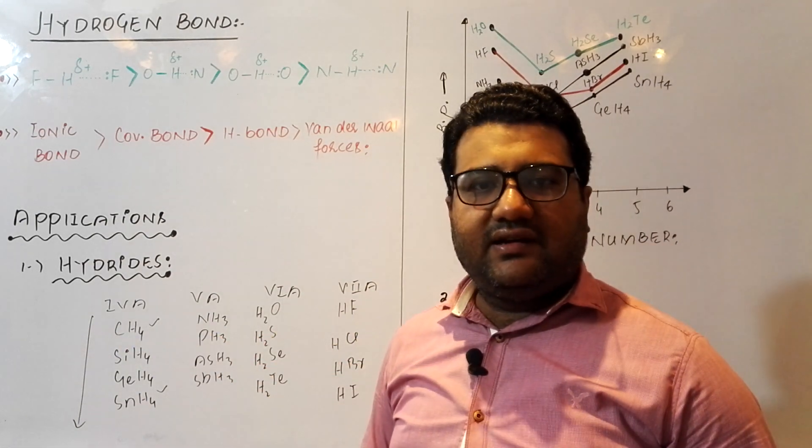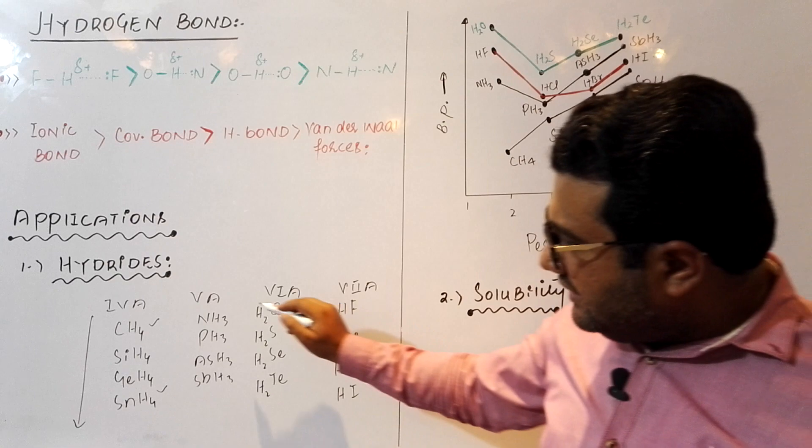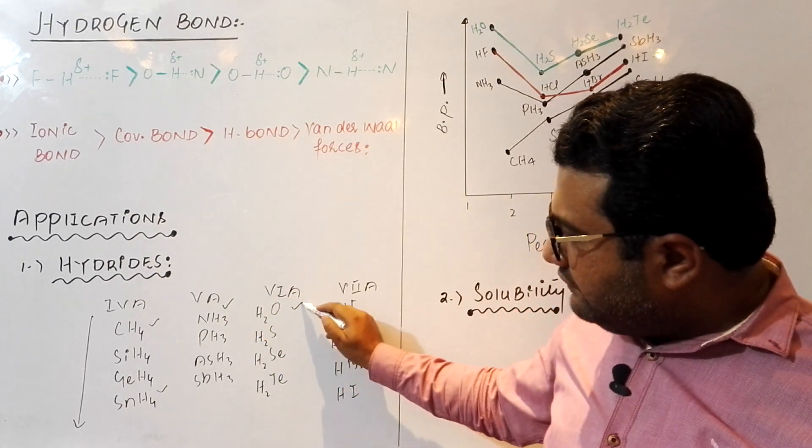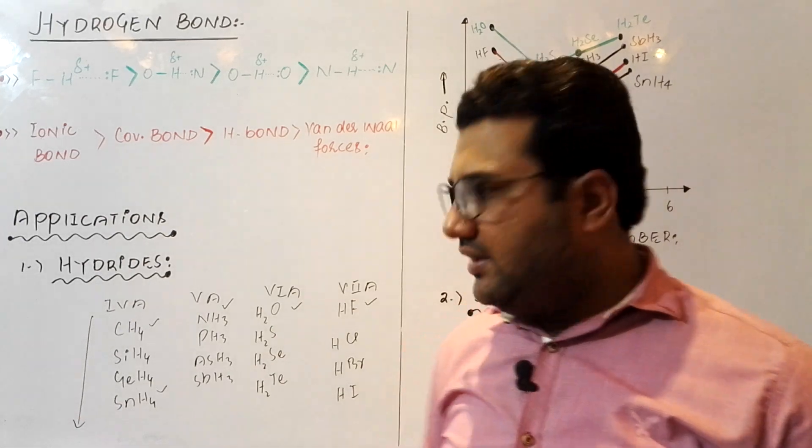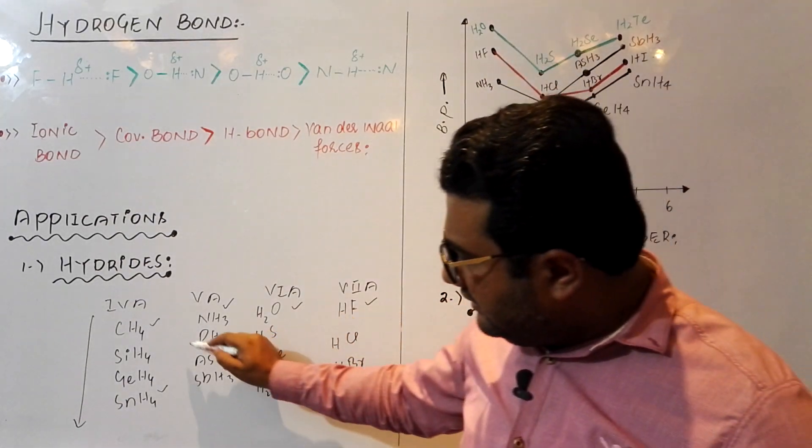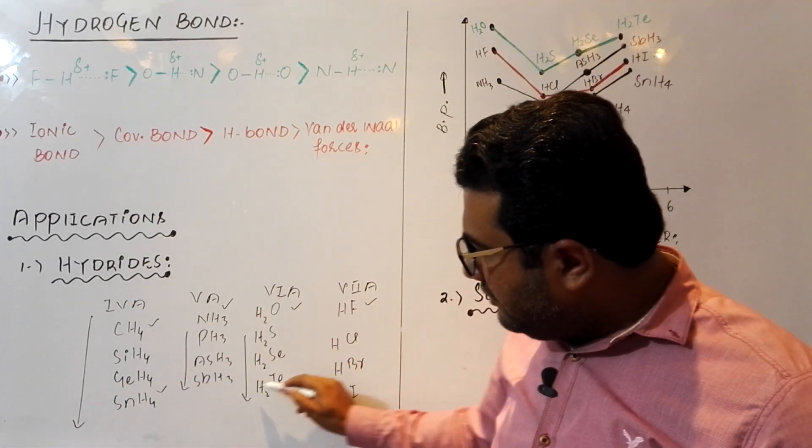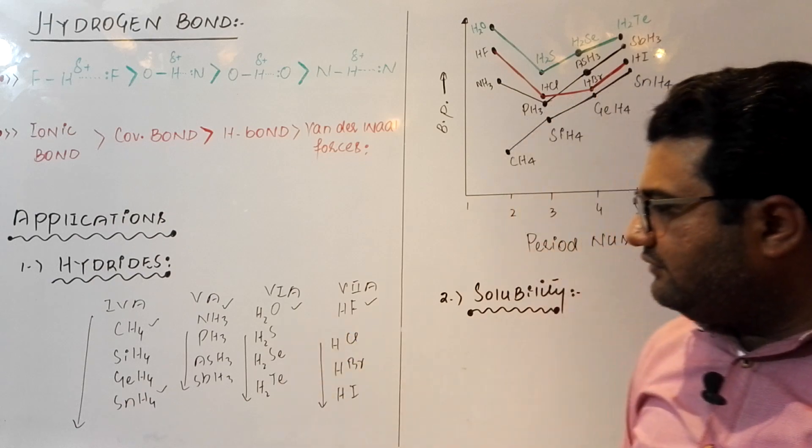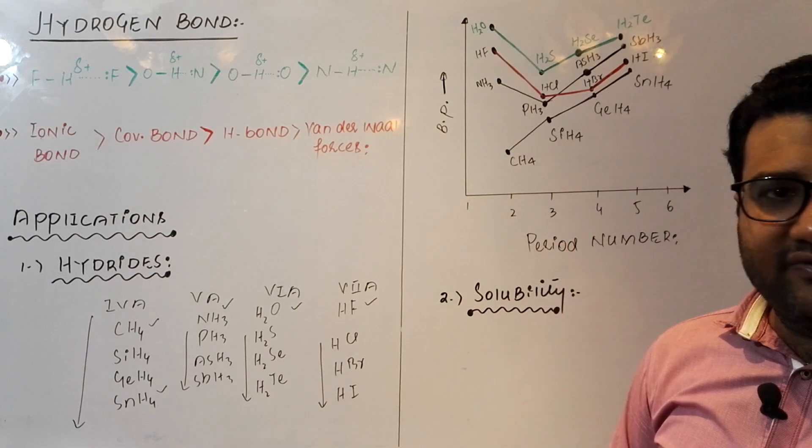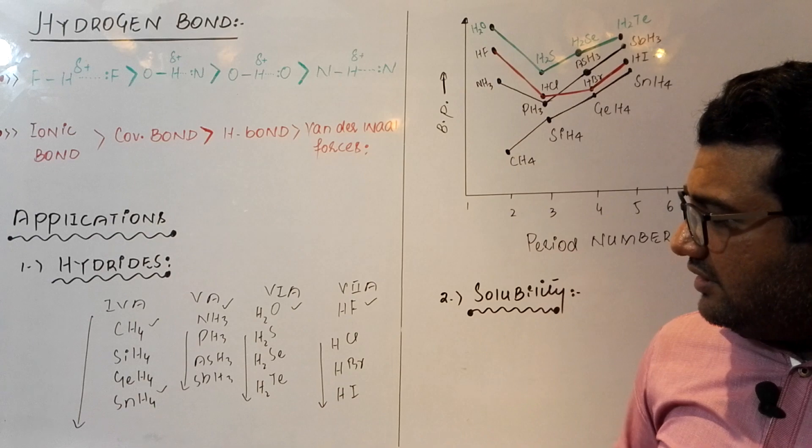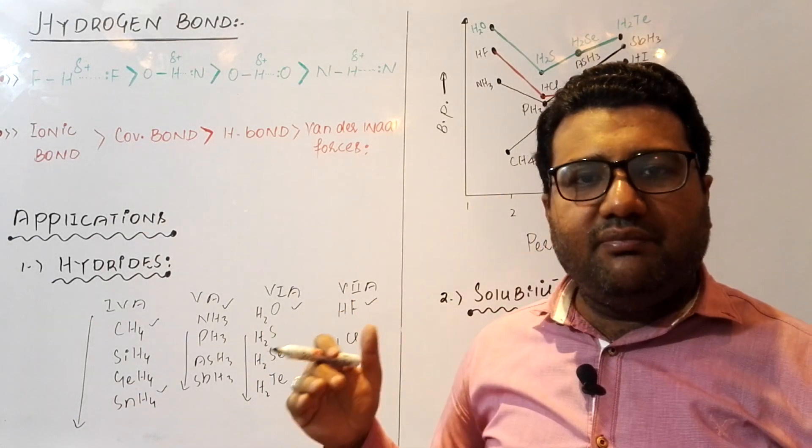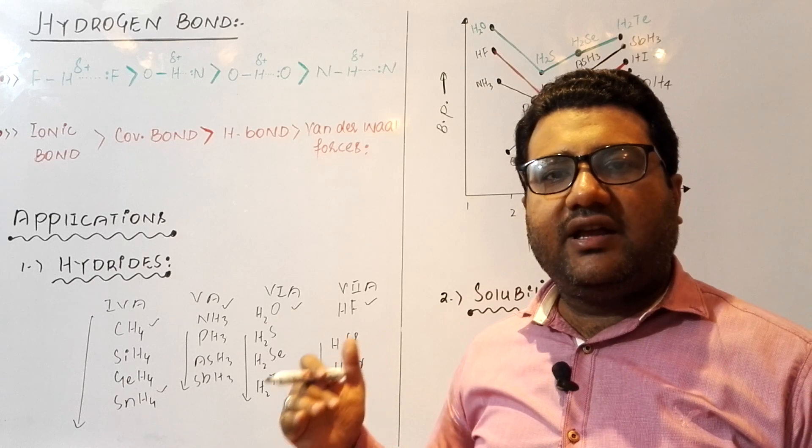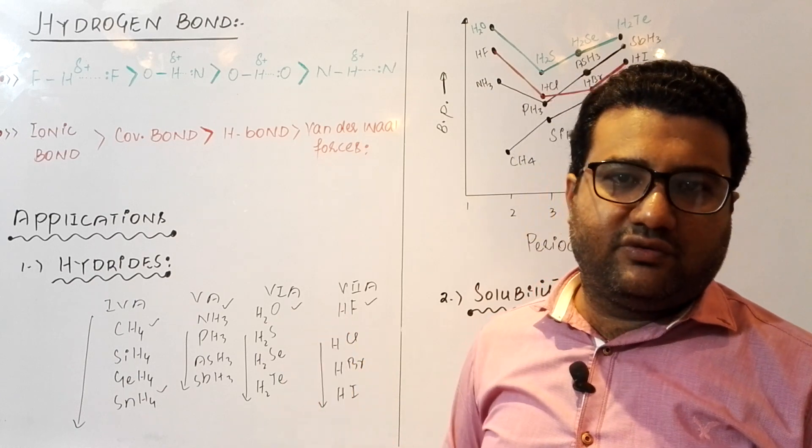In 5A, 6A, and 7A, this normal trend is slightly disturbed. Because in 5A ammonia, 6A water, and in 7A HF, they show maximum boiling point. And the remaining all, they show the normal trend. Meaning, when you will move down, the boiling point will further increase. According to the normal trend, the boiling point of ammonia, water, and HF should be minimum. But in reality, it is maximum in their respective groups. Why? Just because of the hydrogen bonding.